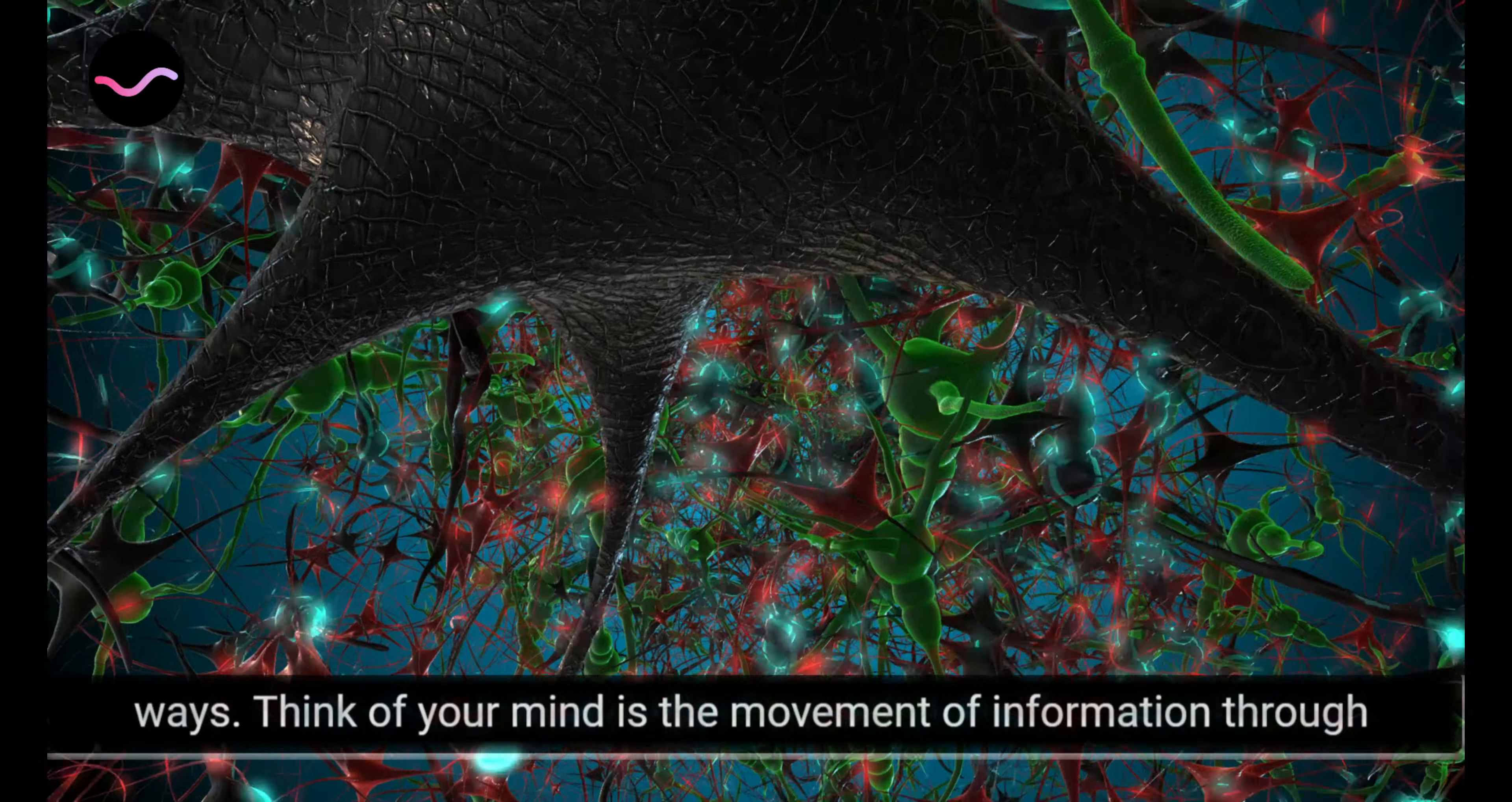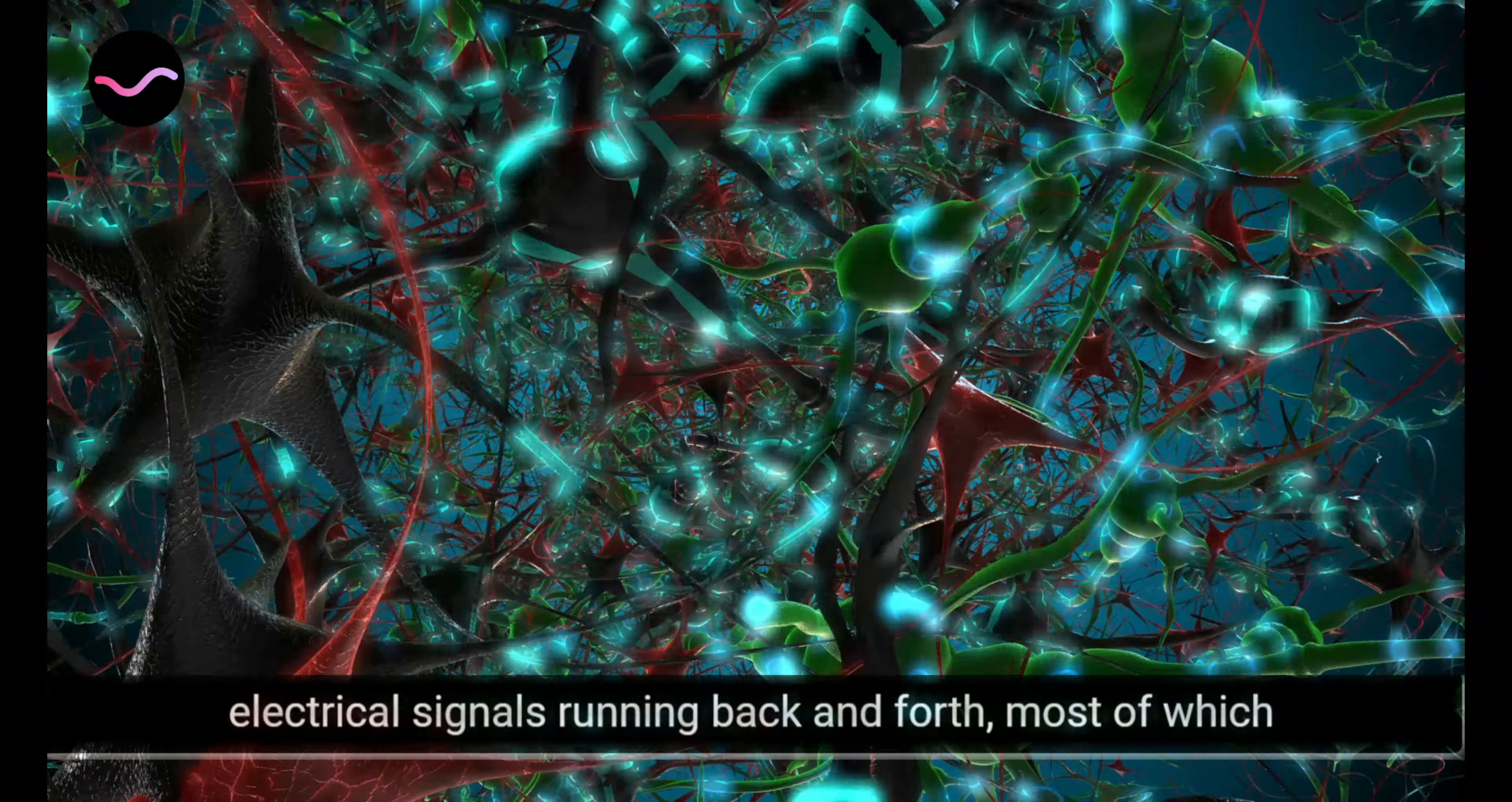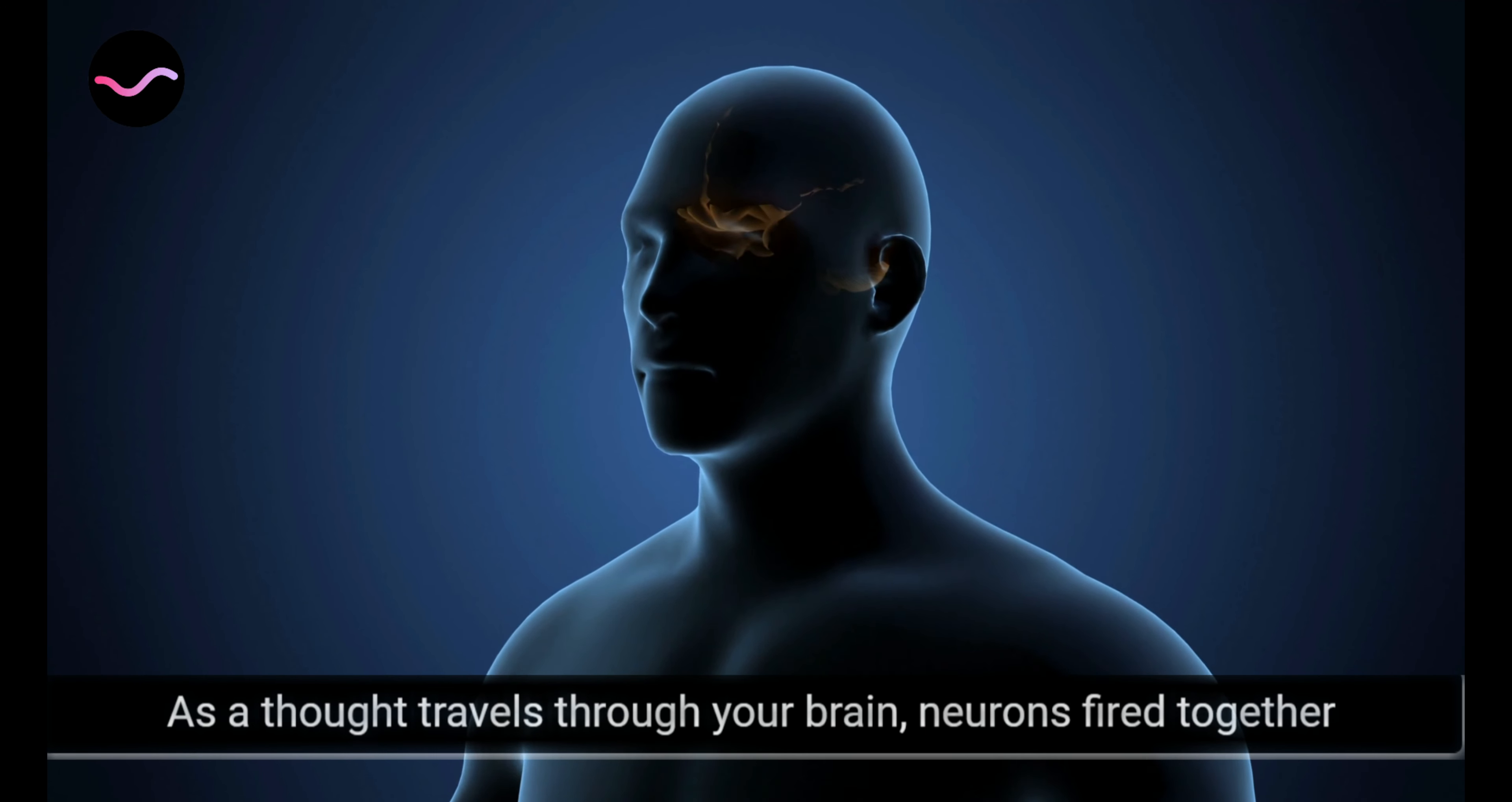What flows through your mind also sculpts your brain in permanent ways. Think of your mind as the movement of information through your nervous system, which on a physical level is all the electrical signals running back and forth, most of which is happening below your conscious awareness.